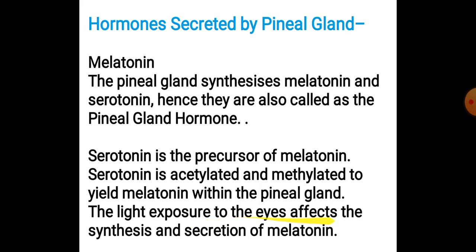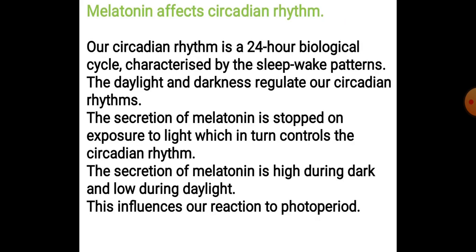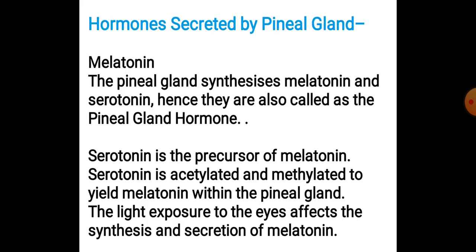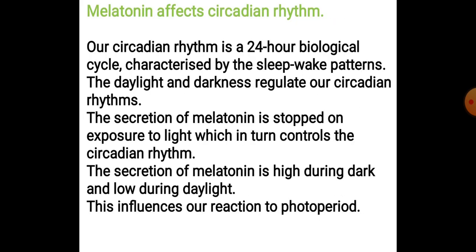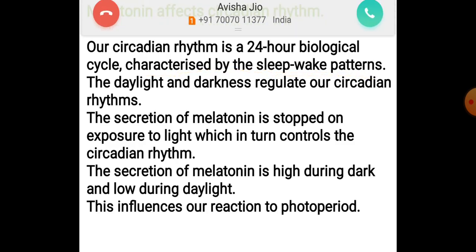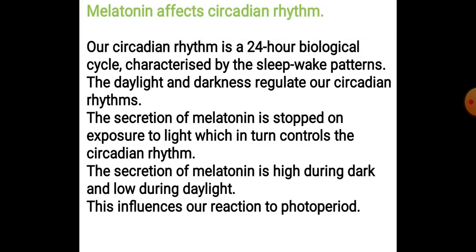The light exposure of the eyes affects the synthesis and secretion of melatonin. Melatonin affects the circadian rhythm — that is your 24-hour biological cycle, also characterized by sleep-wake patterns. Daylight and darkness regulate our circadian rhythms.